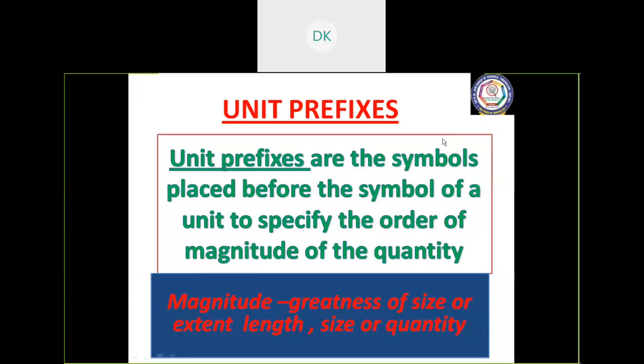For example, here, just represent the value 9.11 into 10 to the power 11 and small m. This small m is the unit. It is a unit prefix of the symbol placed before the symbol of unit. Before this unit which is placed over here, 10 to the power 11, this is called prefix. I hope you understand.